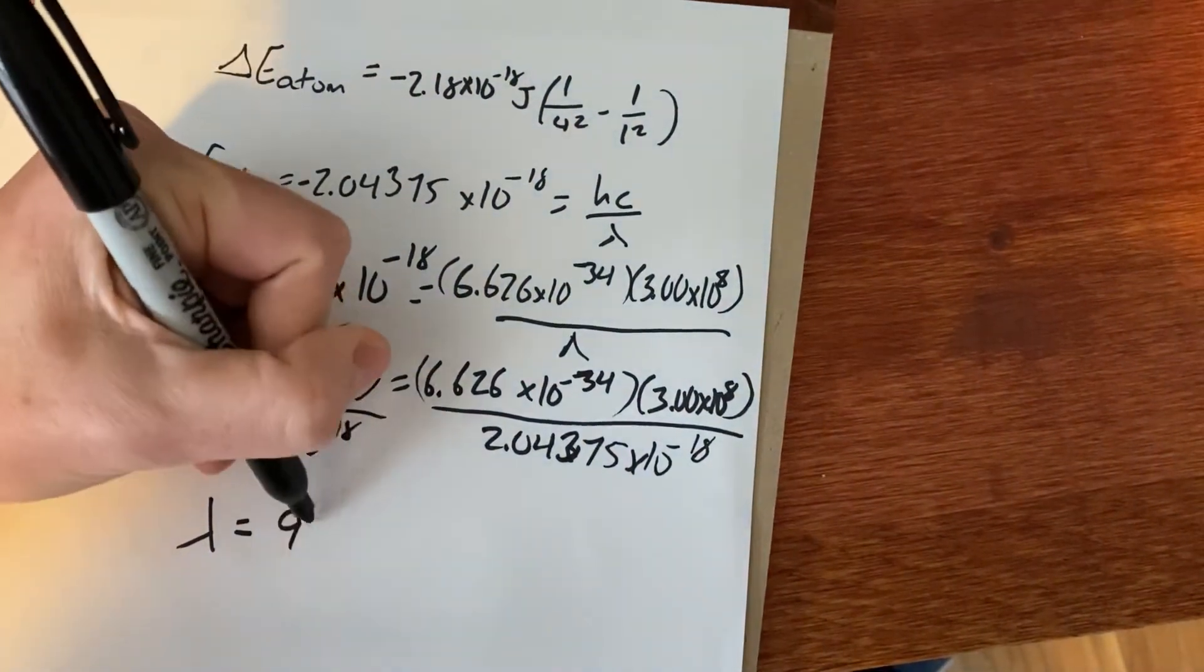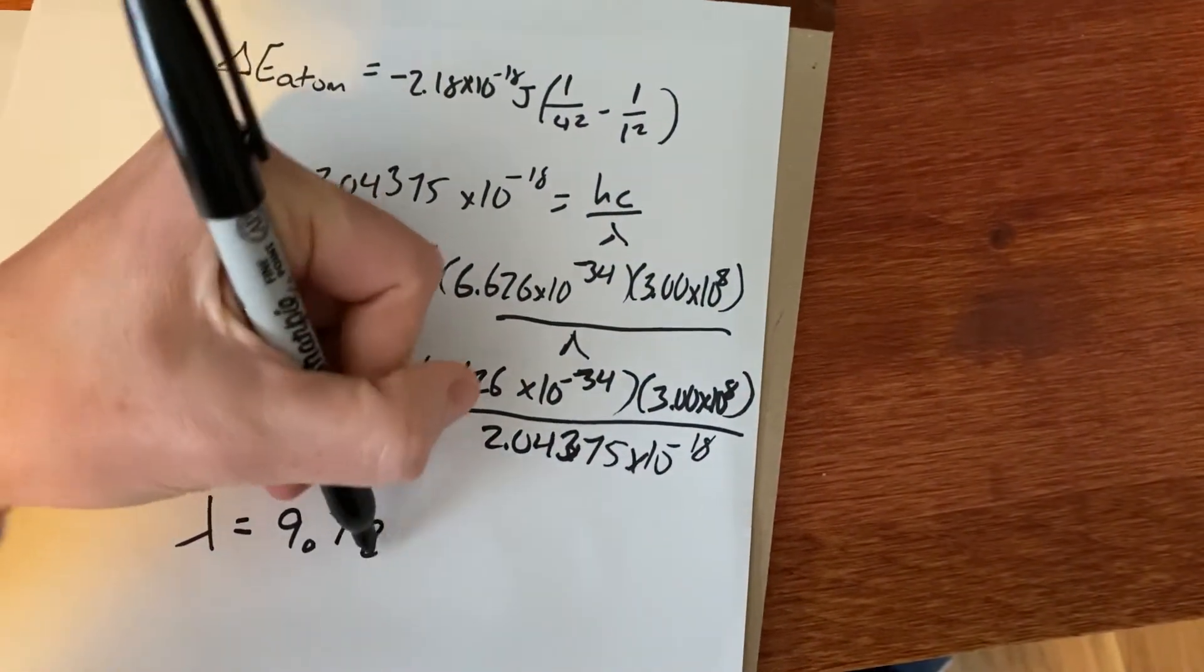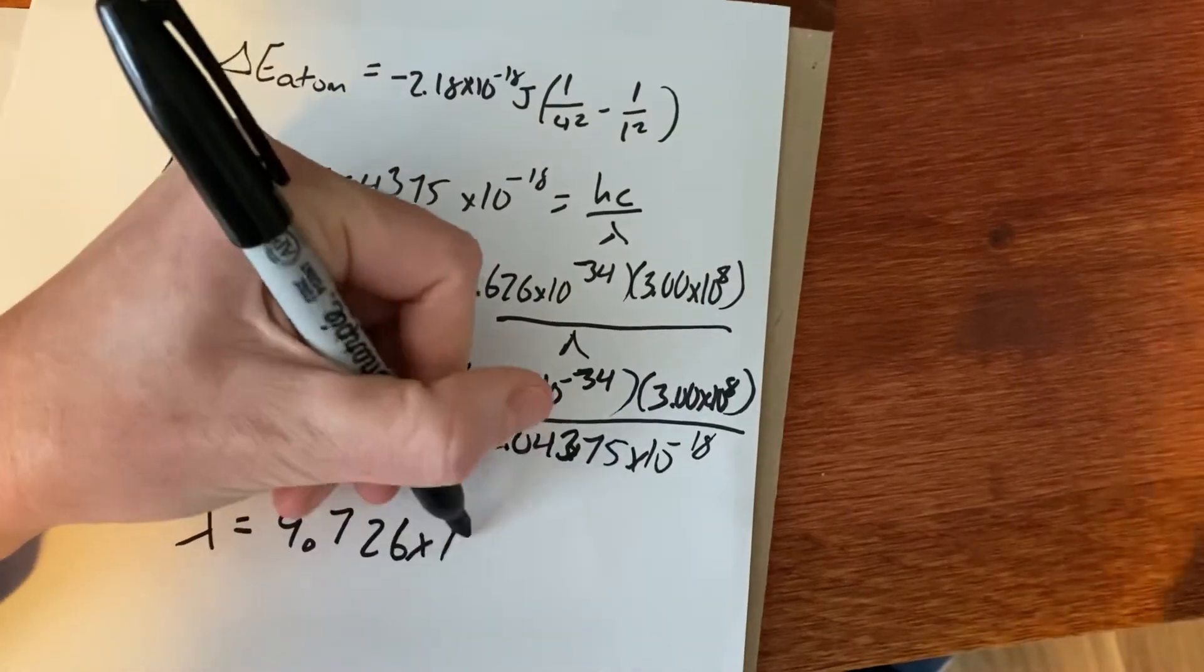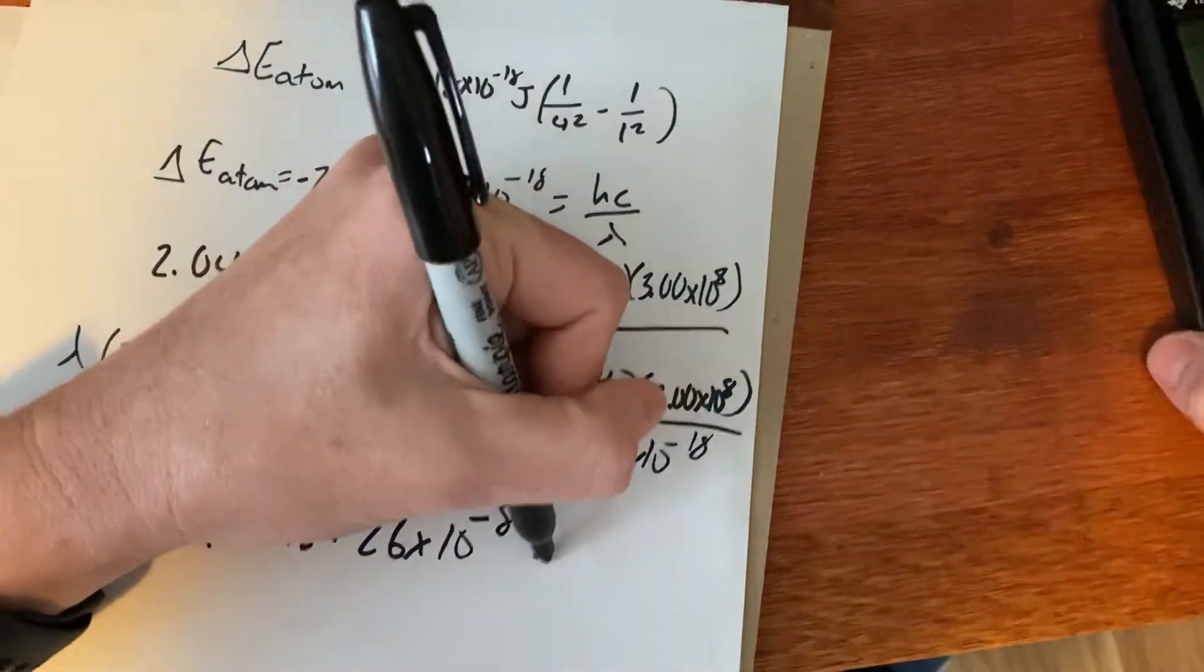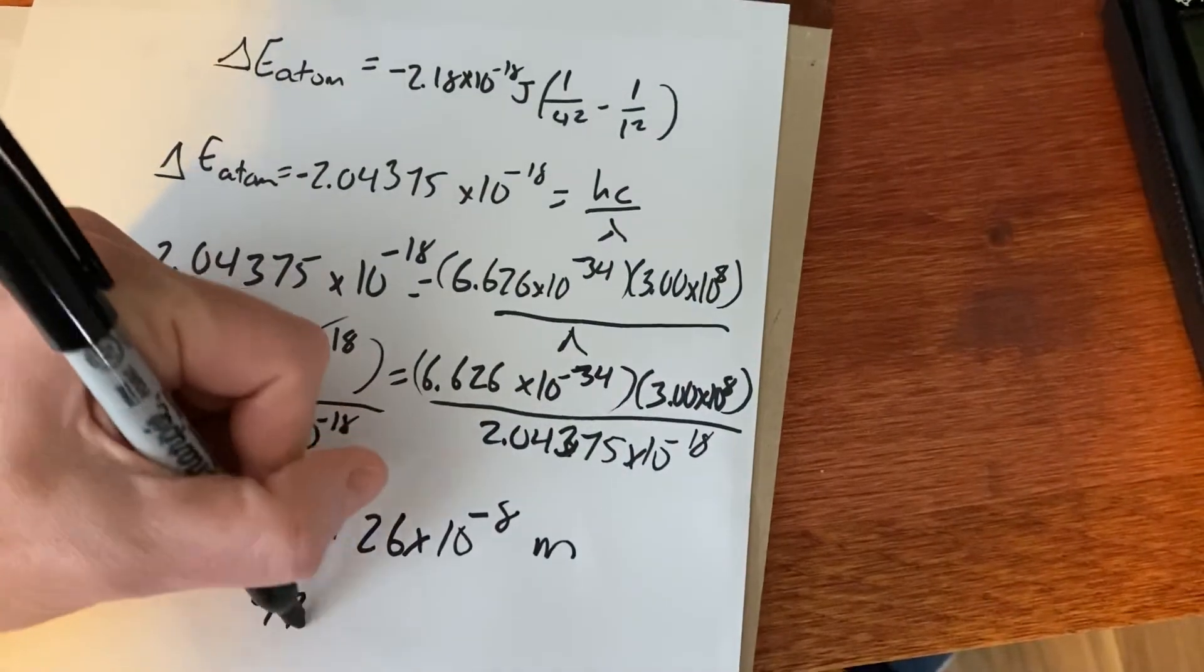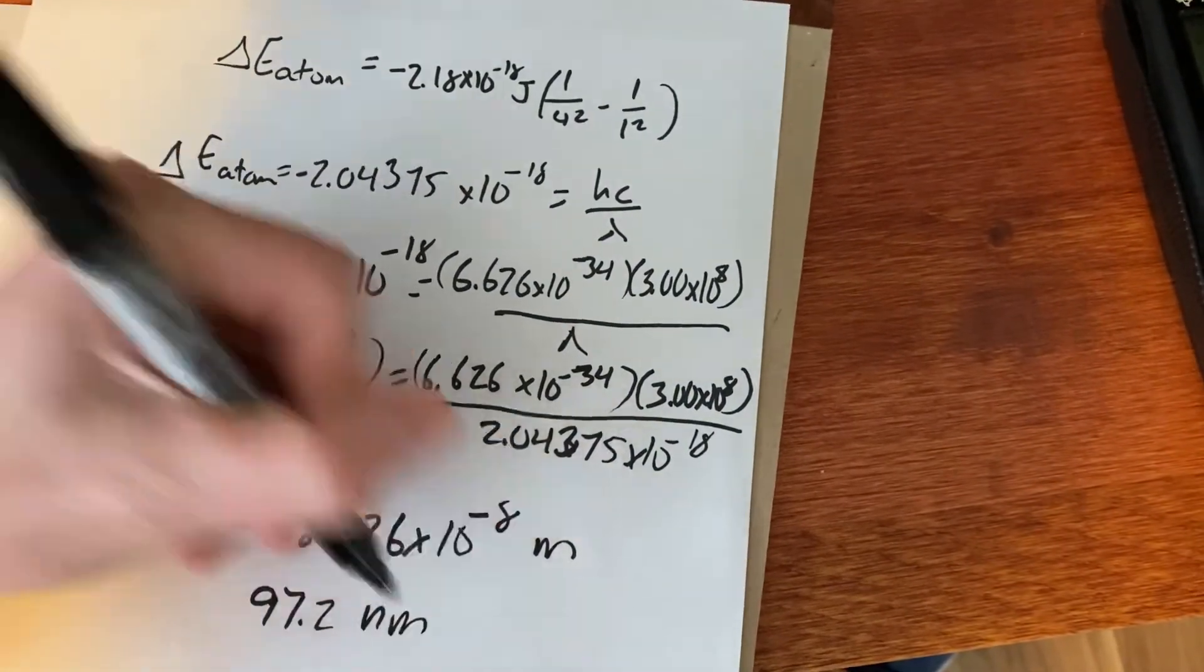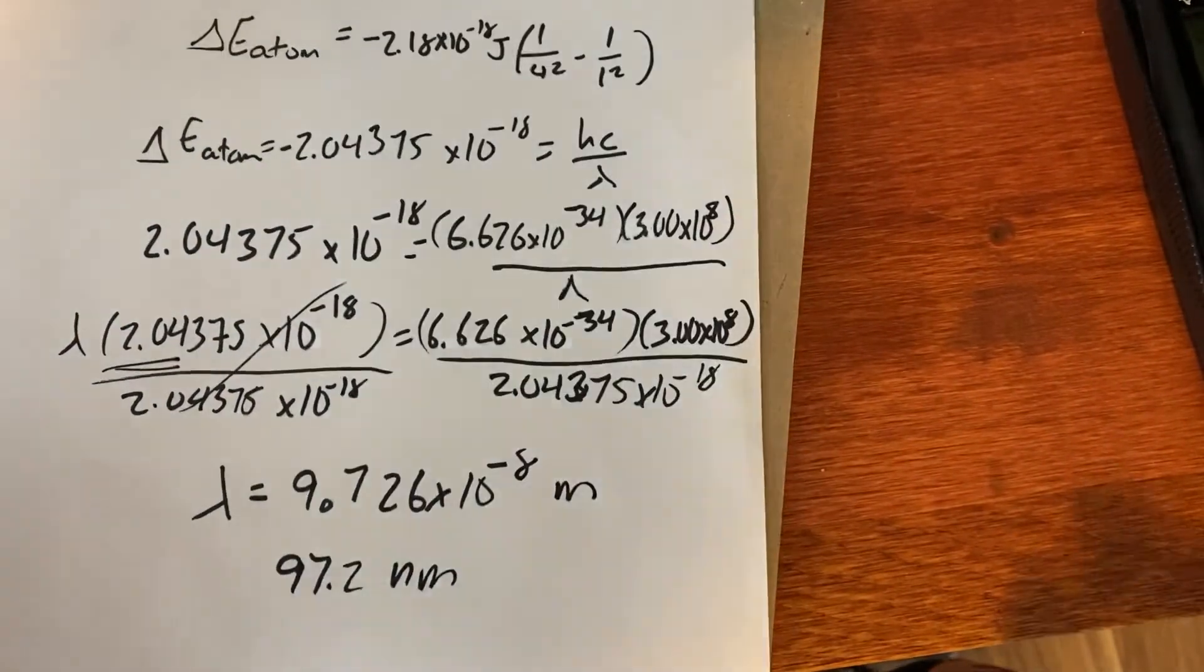lambda equals 9.726 times 10 to the negative eight meters, which would be 97.2 nanometers. All right, hopefully this helped. Have a good one.